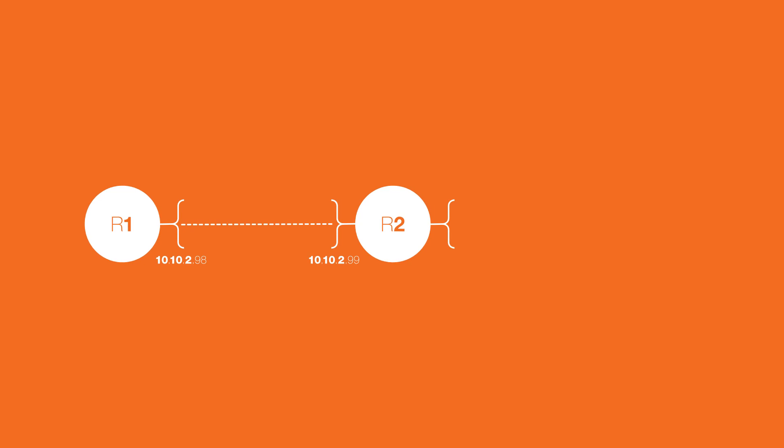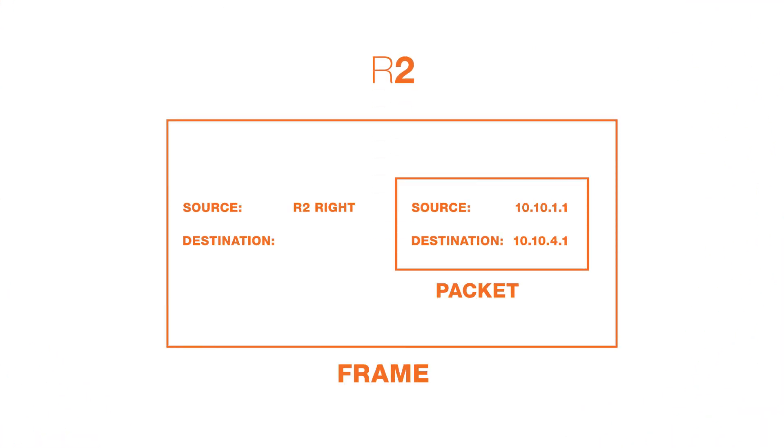R2 accepts the frame on its left interface and sees that the MAC address is its MAC address. Then R2 inspects the destination IP address, and it isn't its IP address. R2's right interface then ARPs, looking for the MAC address of R3's left interface. After the ARP reply comes back, the new source MAC of the frame is the right interface of R2, and the new destination MAC is the left interface of R3.